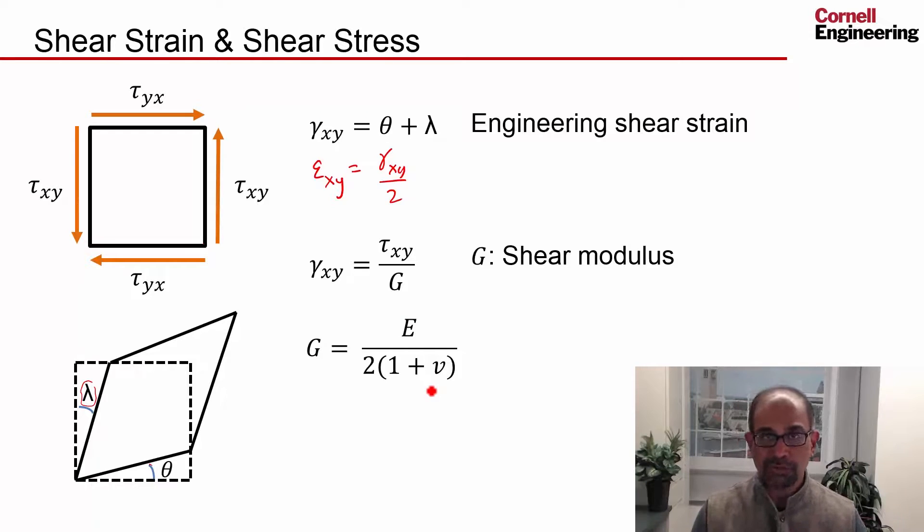And so when we're doing the bike crank and the bolted flange examples and answers, we will need to enter only the Young's modulus and Poisson's ratio, and we won't need to enter our shear modulus because that can be deduced from those two material properties.